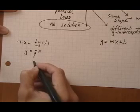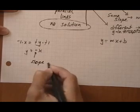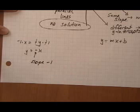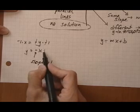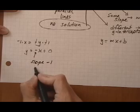I have a slope of minus 1, and my b value, there's nothing here, right? I have plus 0, basically.